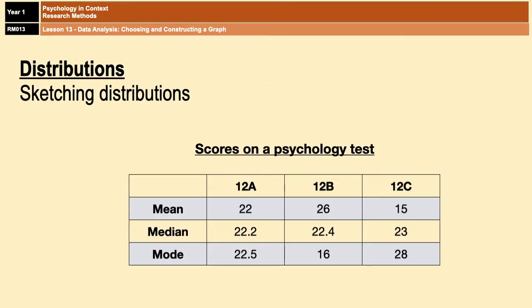In an exam situation, you'd be given a set of results, and using those results you could be asked to sketch the distribution. You could also be asked to simply say what type of distribution would be created by those results and justify your answer. Or you could be asked to interpret the results based on the distribution that those results would produce.